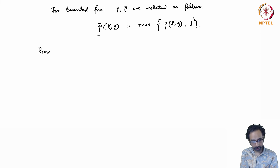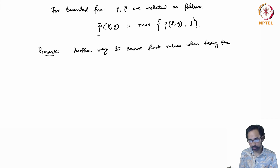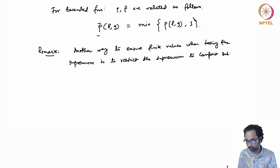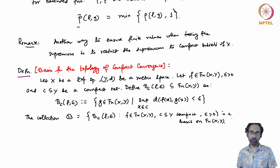There is yet another way to ensure finite values when taking the supremum: restrict the supremum to compact subsets of X. Rather than taking the supremum over all points in X, we restrict to compact subsets, and in this way we get a new topology called the topology of compact convergence.